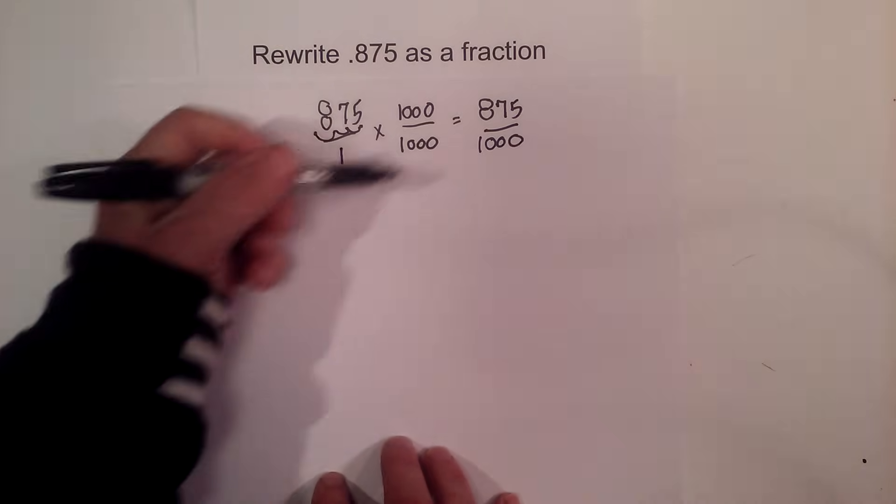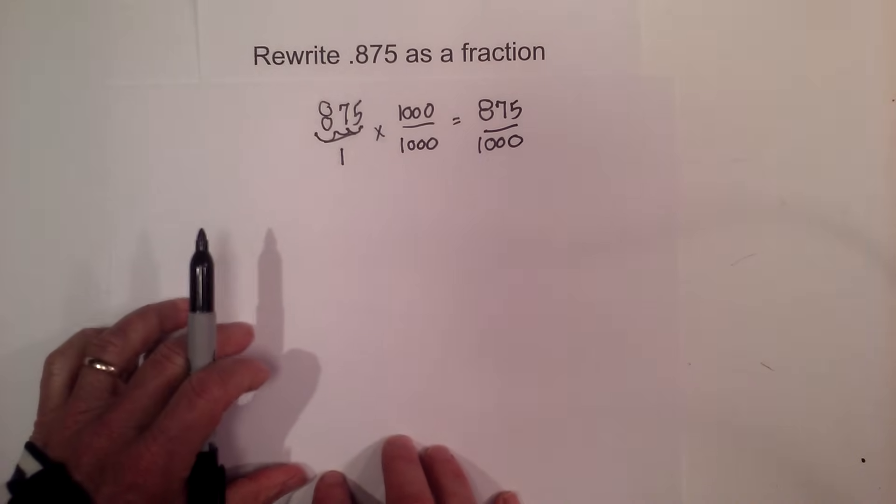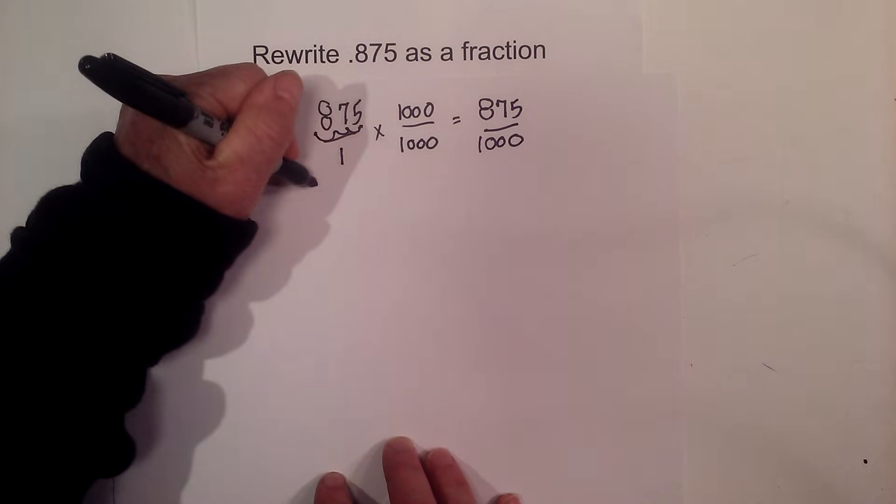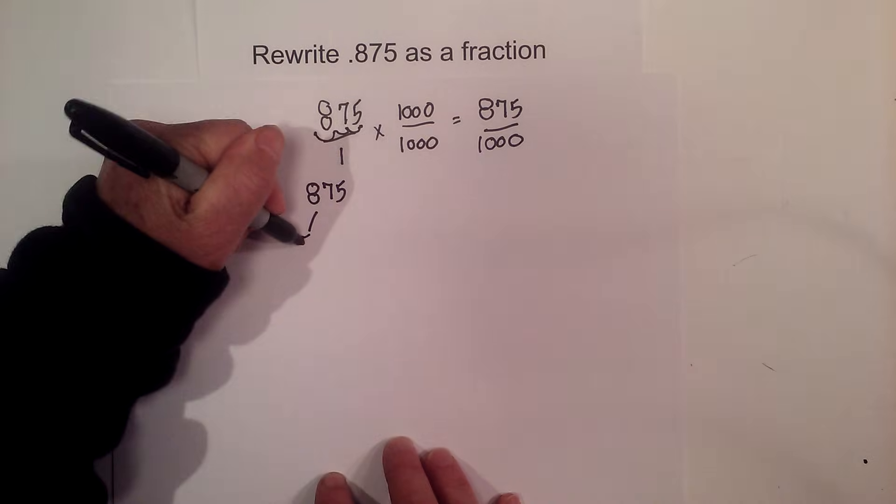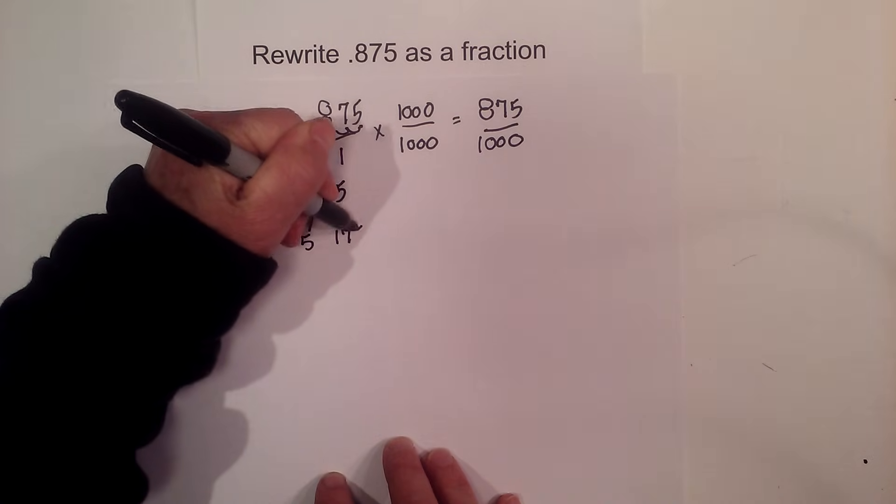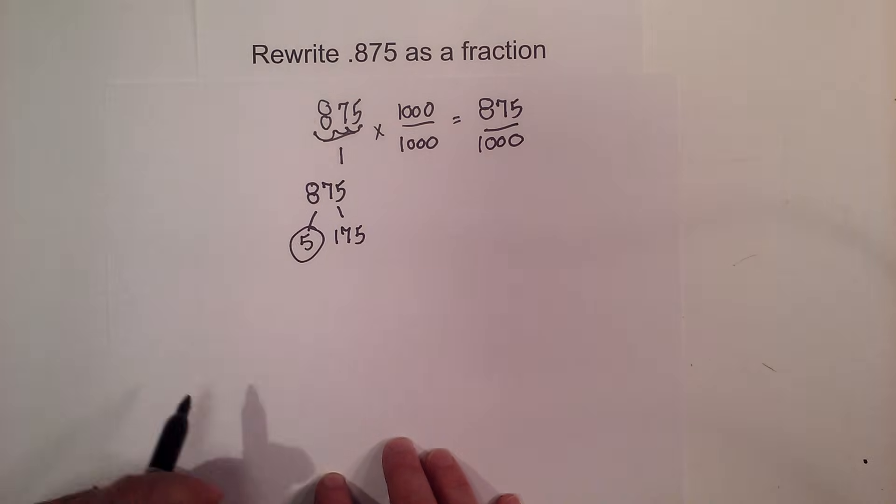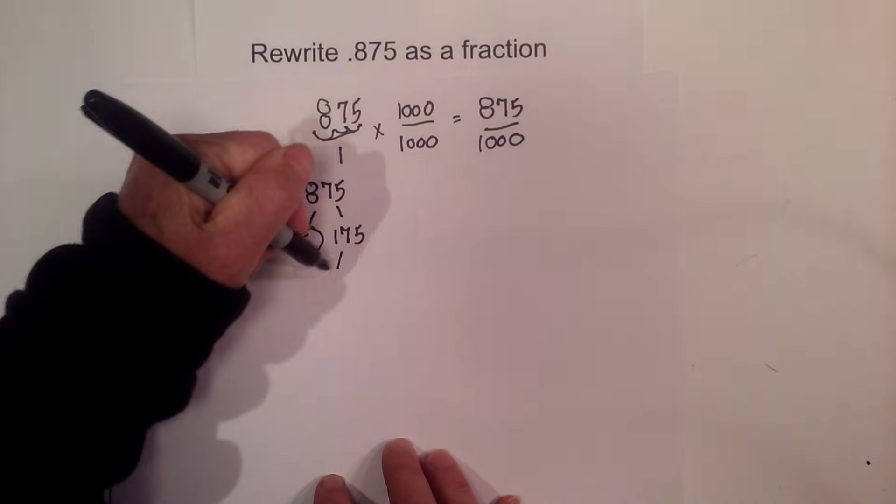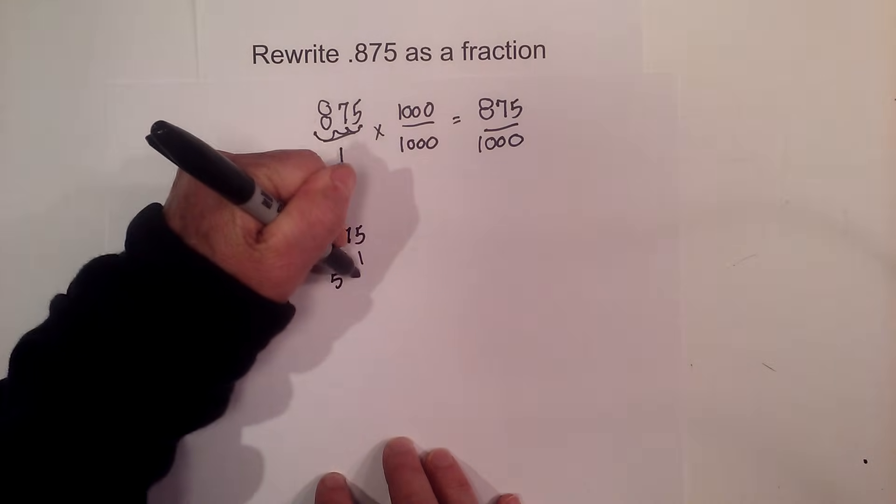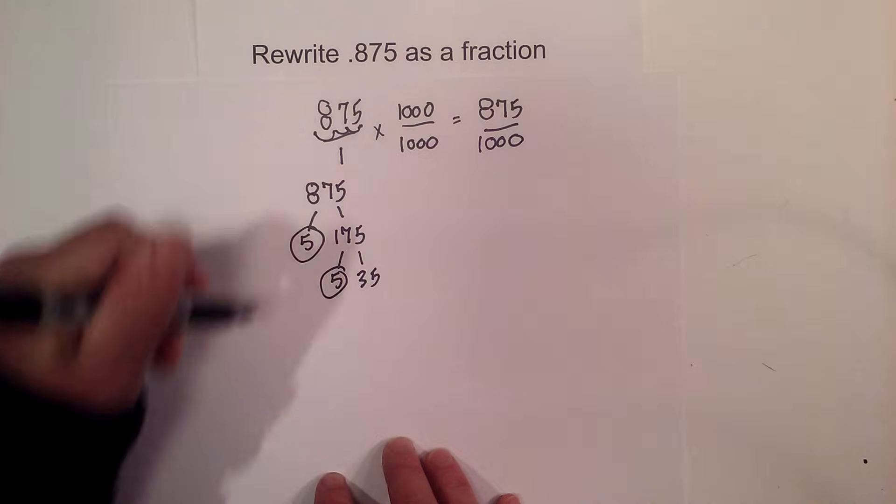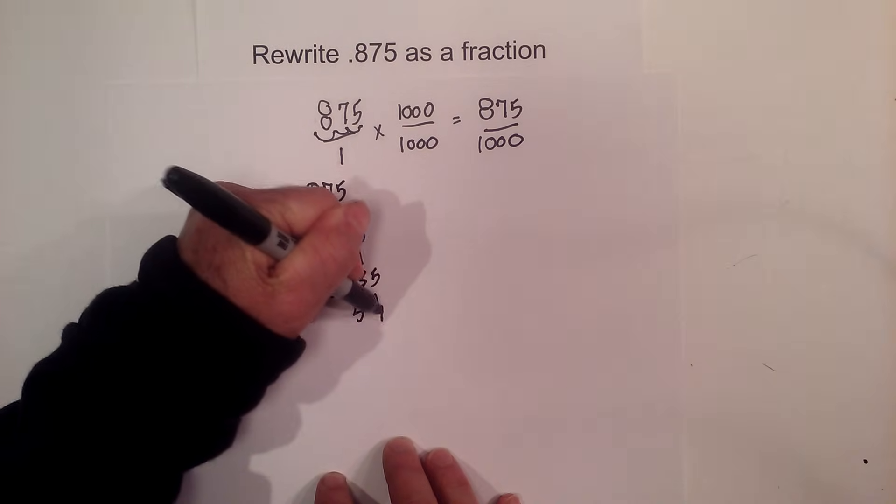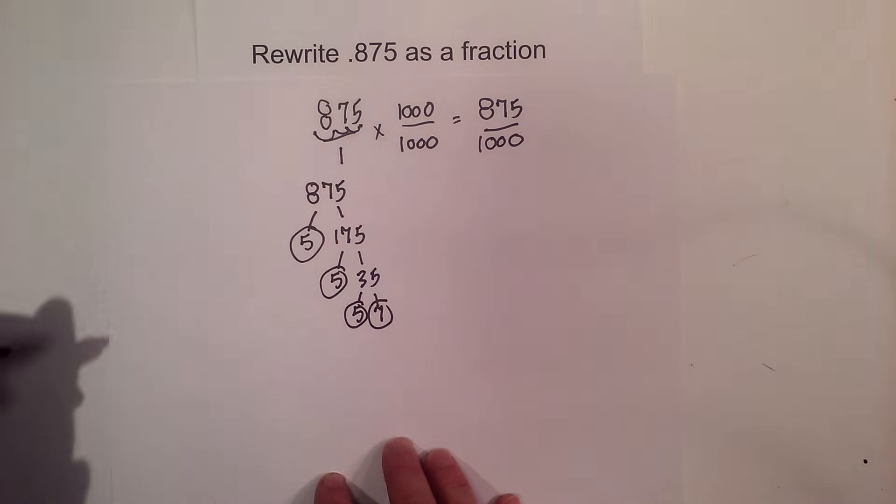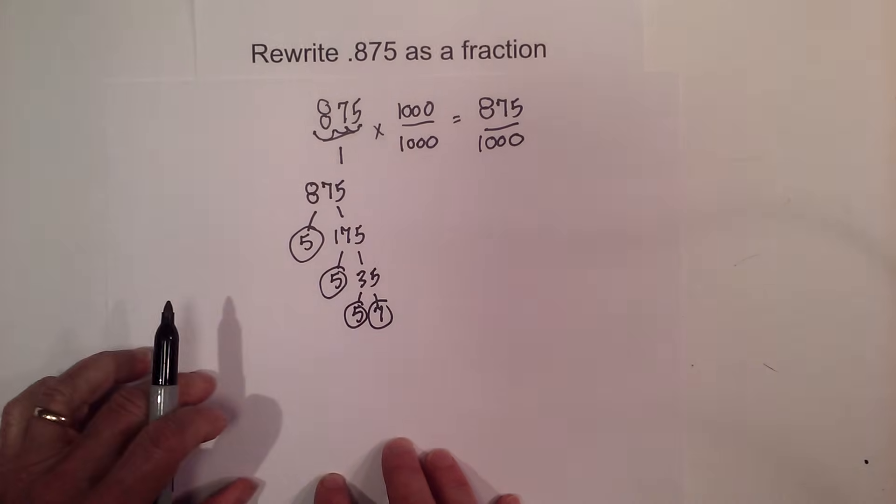Now I need to reduce the fraction or simplify. I'm going to use a factor tree to find the greatest common factor. I can multiply 5 times 175. Circle the 5 because this is prime. Then 5 times 35 equals 175, and 5 times 7 equals 35. I'm down to prime numbers, so I'm finished.